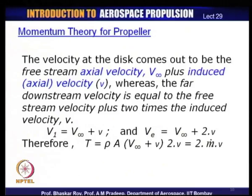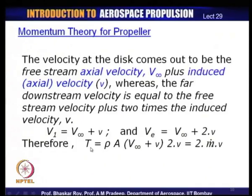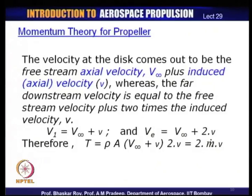The velocity at the disc comes out to be the free stream axial velocity plus induced velocity. Using this, we can write down that thrust of this actuator disc — which is modeling a propeller — is in terms of ρA(V∞ + v) × 2v, which equals twice the mass flow times small v (induced velocity). That is a very simple, neat way of writing what the thrust of a propeller would be when modeled by this actuator disc.